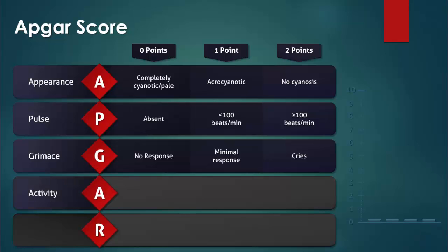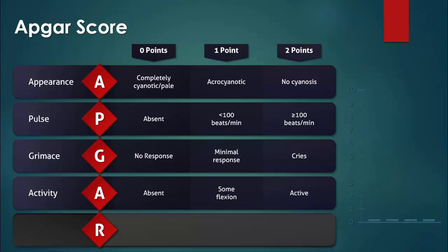The second A stands for activity and it refers to muscle tone. Zero points are given if the baby is completely flaccid. One point is given if there is some muscle flexion. Two points are given if the baby is active.